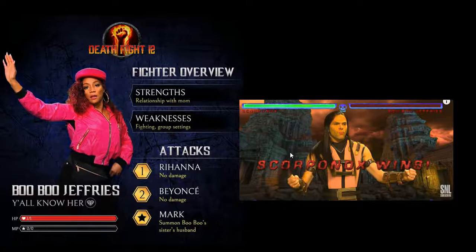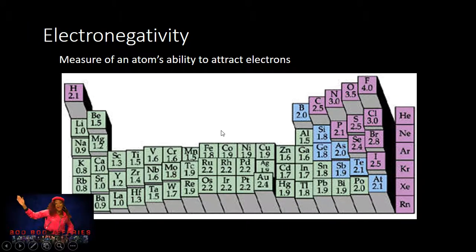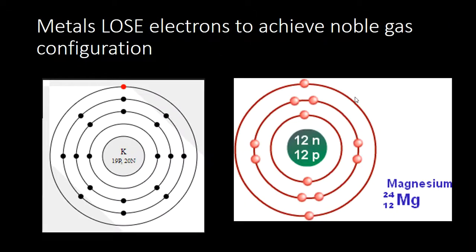On with the Death Fighter. Death Fighter has Boo Boo Jeffries, and Boo Boo Jeffries hates fighting, whereas Scorponox loves fighting. And the point of this is electronegativities, which are a measure of the atom's ability to attract electrons. Every atom is sort of ranked like they are in those video games, and the higher the ranking, the more likely they are to fight. So you can see here that the Boo Boo Jeffries side of things are down here, and the Scorponox side of things are up here. And that becomes significant in this unit.